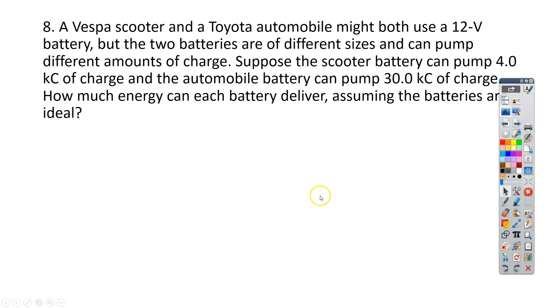For our next one, number 8, this says a Vespa scooter and a Toyota automobile both use a 12-volt battery, but the two batteries are much different in size and they can pump different amounts of charge. So suppose a scooter battery can pump 4 kilocoulombs of charge and the automobile battery can do 30 kilocoulombs of charge. How much energy can each battery deliver, assuming the batteries are ideal?